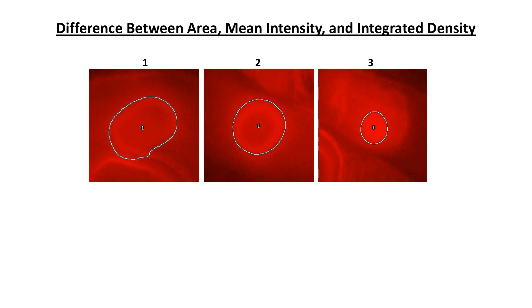Now I am going to explain the difference between the three measurements area, mean intensity and integrated density using these three fluorescence images. Starting with the area of the region of interest represented by the blue line.